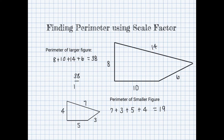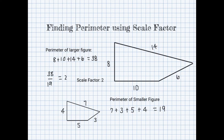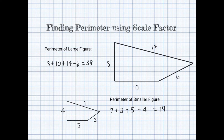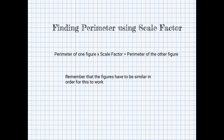38 divided by 19 is 2, which means the perimeter of the larger figure is 2 times the perimeter of the smaller figure. These are the same figures we used before, so the scale factor is 2. The scale factor is the exact same as the ratio between the perimeters. This shows that to find perimeter using scale factor, you multiply the perimeter of one figure by the scale factor to find the perimeter of the other figure. Remember, the figures must be similar for this to work.